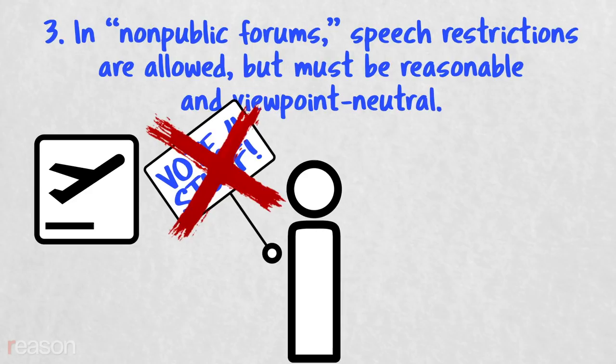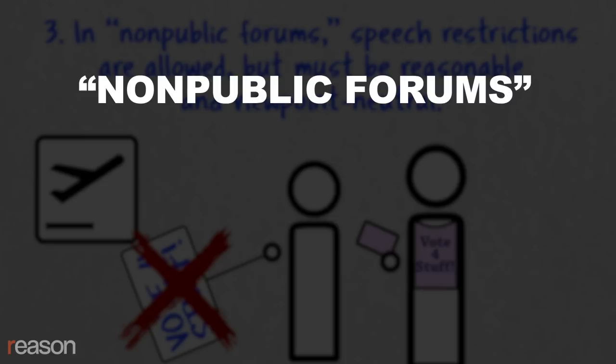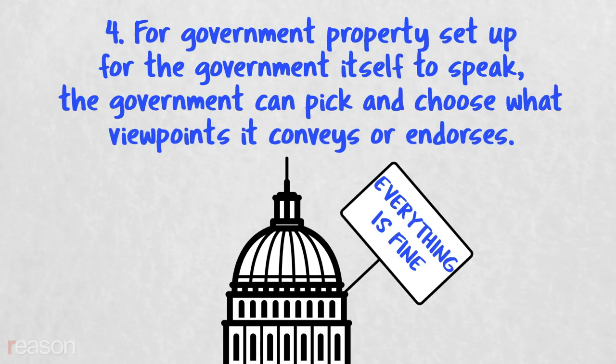Rule 3. A lot of government property is open to the public, but not for speech. Airports, for instance, are set up to promote transportation, not speaking. But people there will wear t-shirts with messages on them, talk to friends, maybe even approach strangers with leaflets. In these so-called non-public forums, the rule is much like in limited public forums. Speech restrictions are allowed, but must be reasonable and viewpoint-neutral.